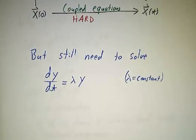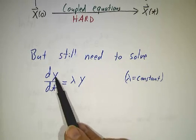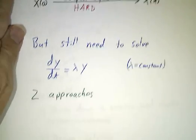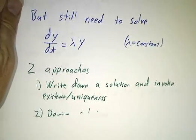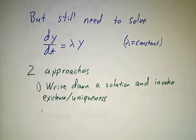So how do you solve an equation of this sort? Lambda is some constant. We have the derivative of y is lambda times y. There are two approaches to solving equations like this. One is to guess a solution, and if you guess a solution, then you can mumble something about existence and uniqueness of solutions to differential equations.